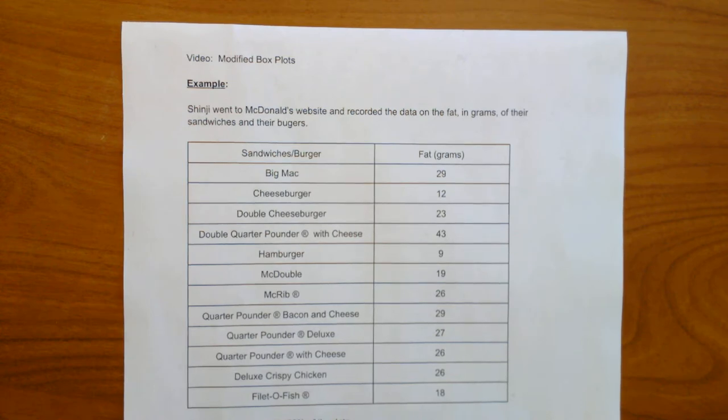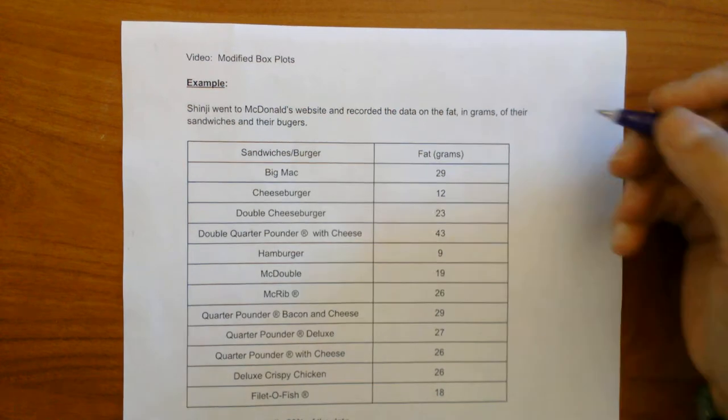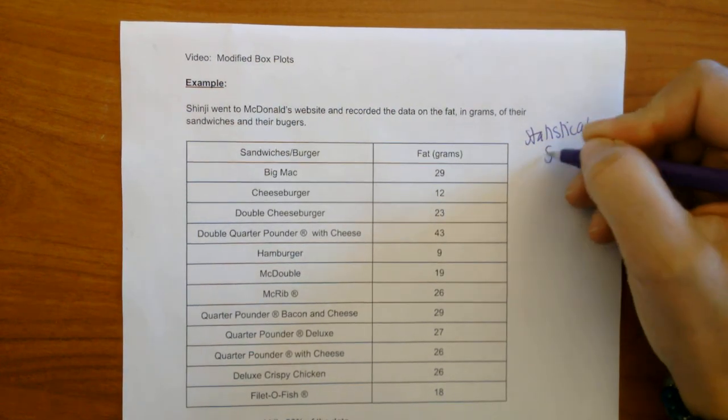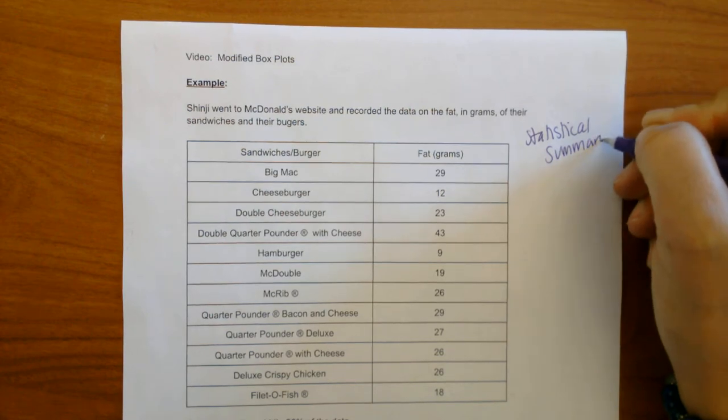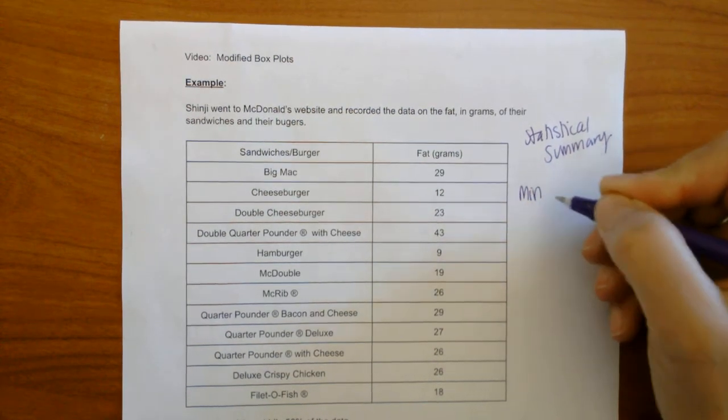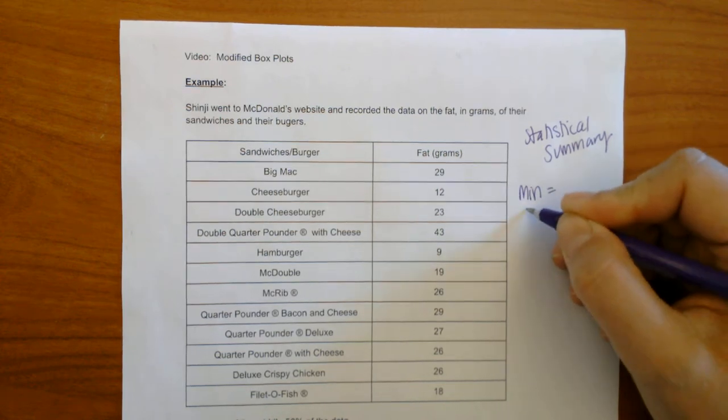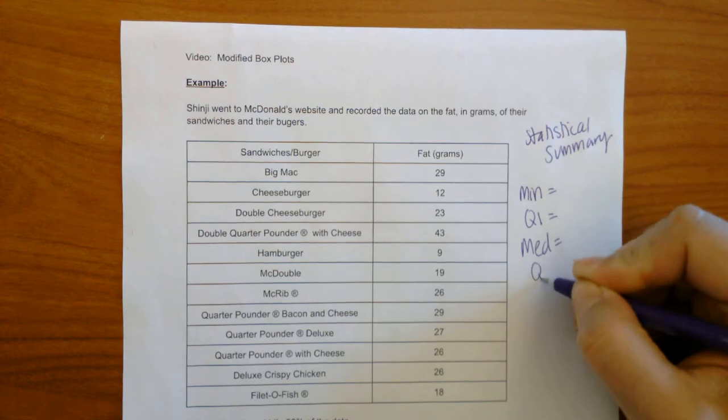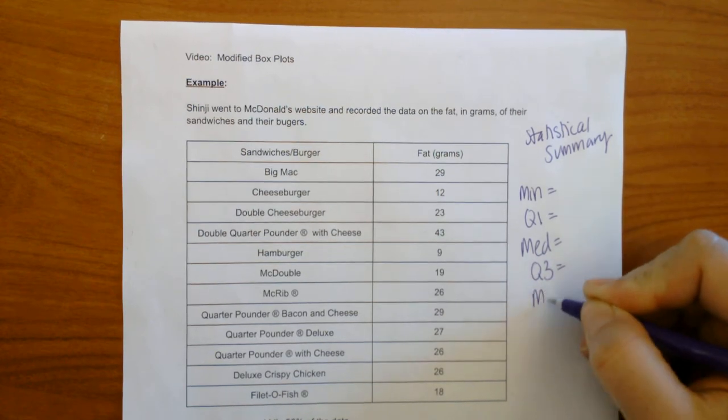Before we do a modified box plot, what we need to get is our statistical summary. In our statistical summary we're going to be doing the five number summary where we're going to be recording the minimum, quartile 1, the median, quartile 3, and the max.